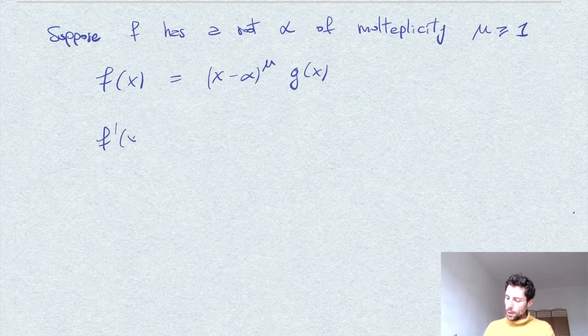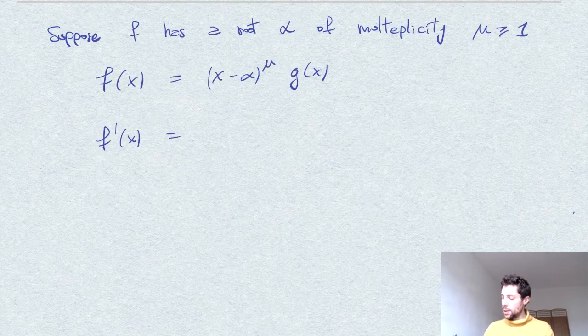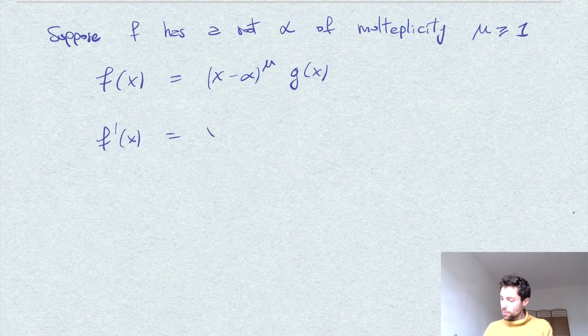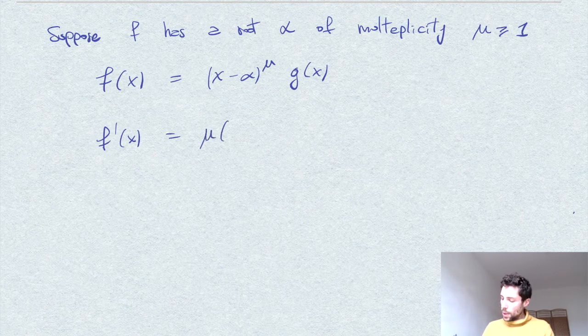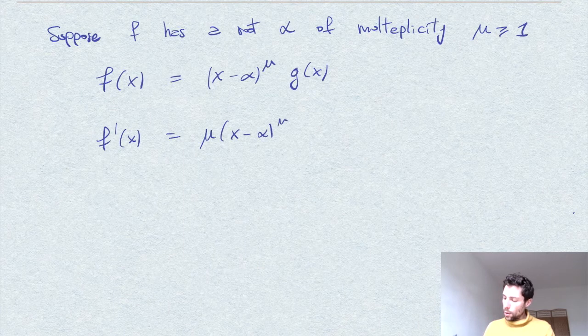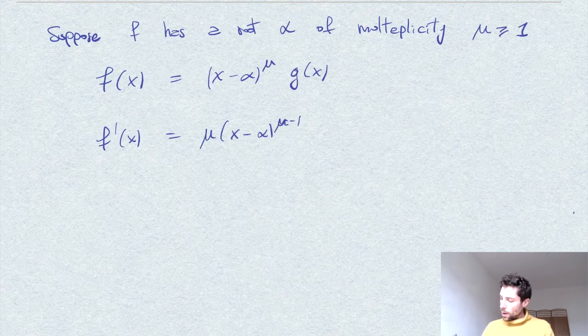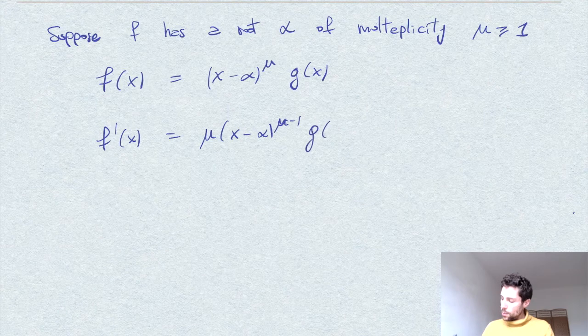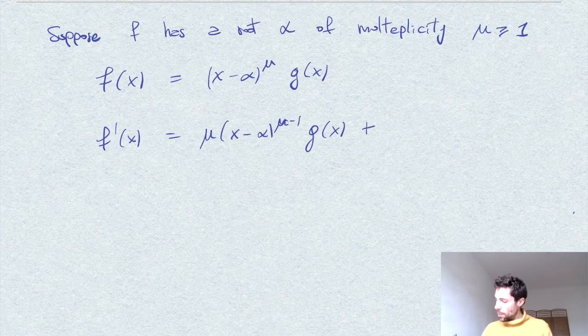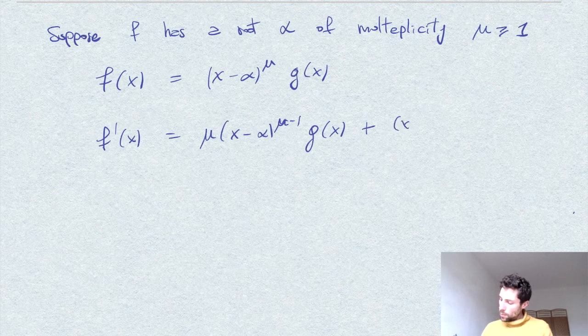we see that f derivative of this is, of course, mu times x minus alpha power mu minus one times x minus alpha power mu minus one. g plus x